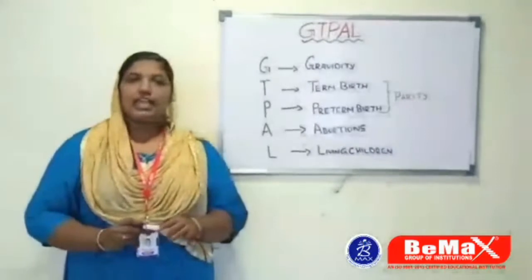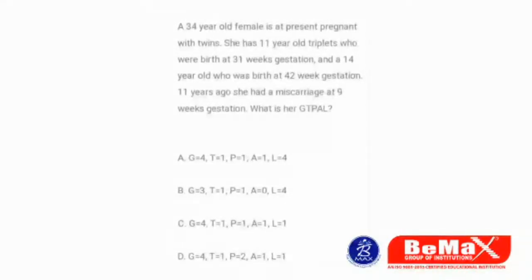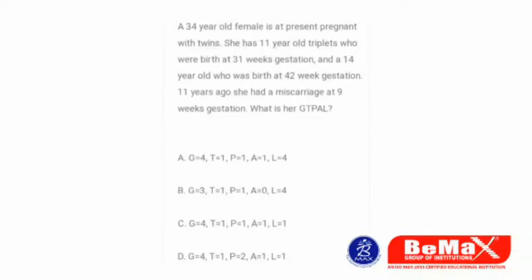Let me explain with an example. A 34-year-old female is currently pregnant with twins. She has 11-year-old triplets who were birthed at 31 weeks gestation, and a 14-year-old who was birthed at 42 weeks gestation. Eleven years ago, she had a miscarriage at 9 weeks of gestation. So what is her GTPAL? Options: A) G4, T1, P1, A1, L4 — B) G3, T1, P1, A0, L4 — C) G4, T1, P1, A1, L1 — D) G4, T1, P2, A1, L1.